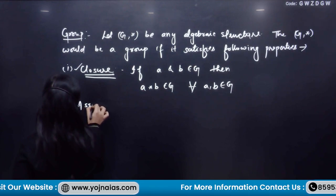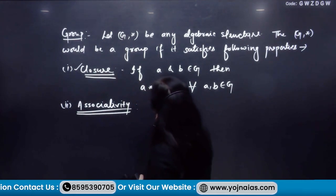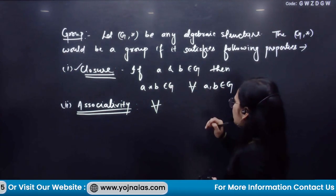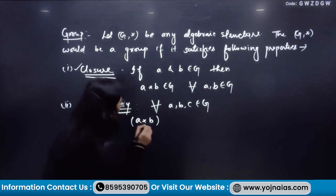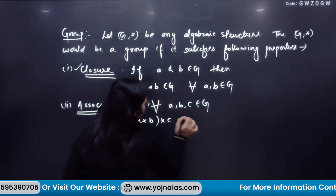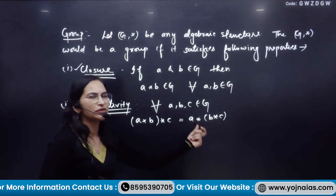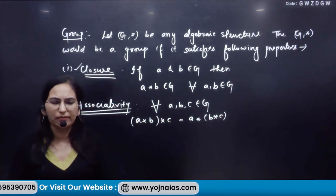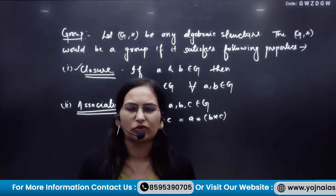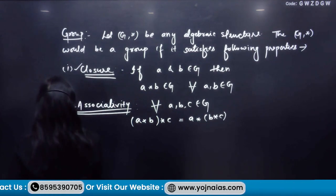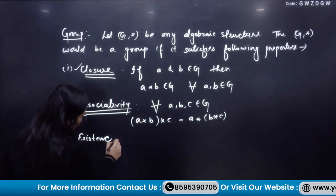For associativity: for all A, B, C coming from G, (A * B) * C should be equal to A * (B * C). That means operating A * B first and then with C should be equal to keeping A aside and first operating B * C, then operating the resultant with A. This is always going to be the same — that is the property of associativity. The third property says there must be existence of identity.